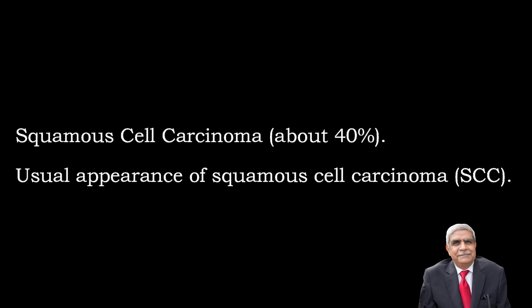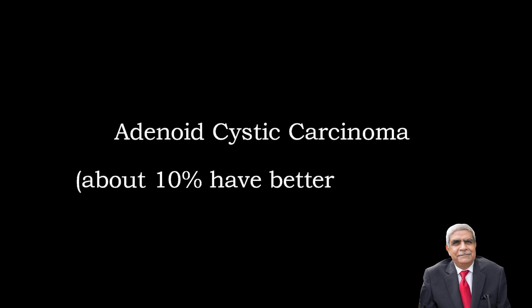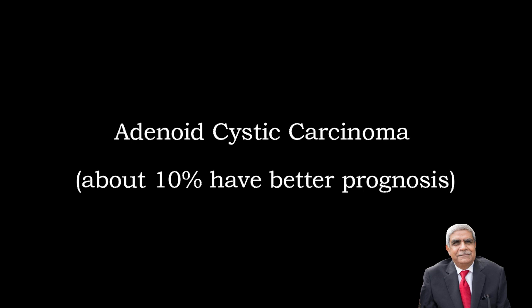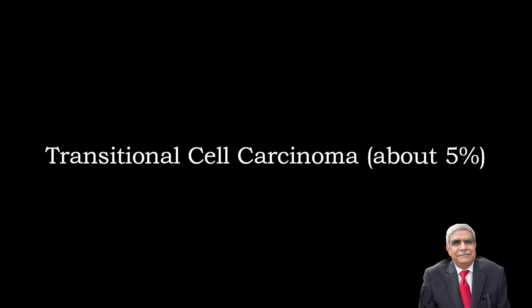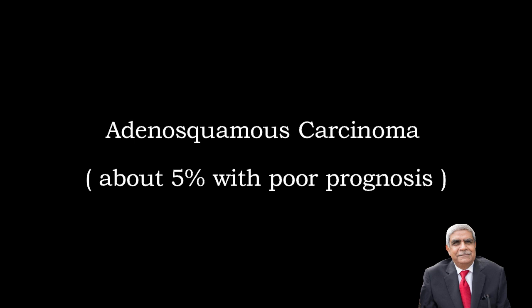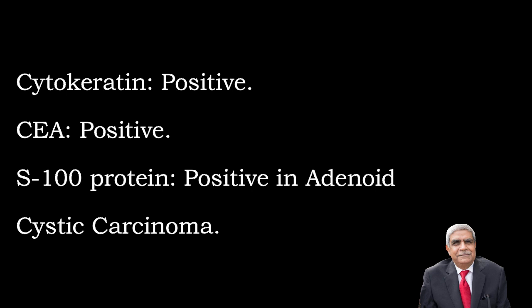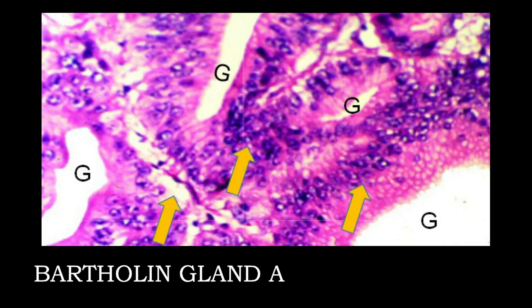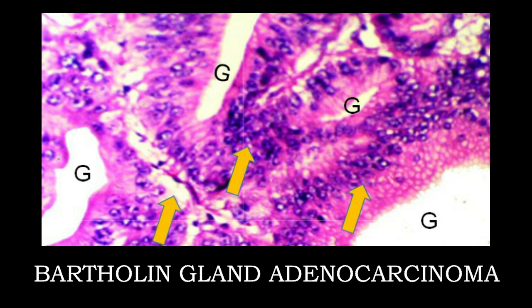Squamous cell carcinoma accounts for about 40 percent of Bartholin gland tumors. Adenoid cystic carcinoma is seen in about 10 percent with better prognosis. Transitional cell carcinoma accounts for about 5 percent. Adenosquamous carcinoma is seen in about 5 percent but has poor prognosis. Immunohistochemistry: cytokeratin positive, CEA positive, S100 protein positive in adenoid cystic carcinoma. The photograph shows gland lumens marked with G and stratification of pleomorphic cells with glands lying back to back.